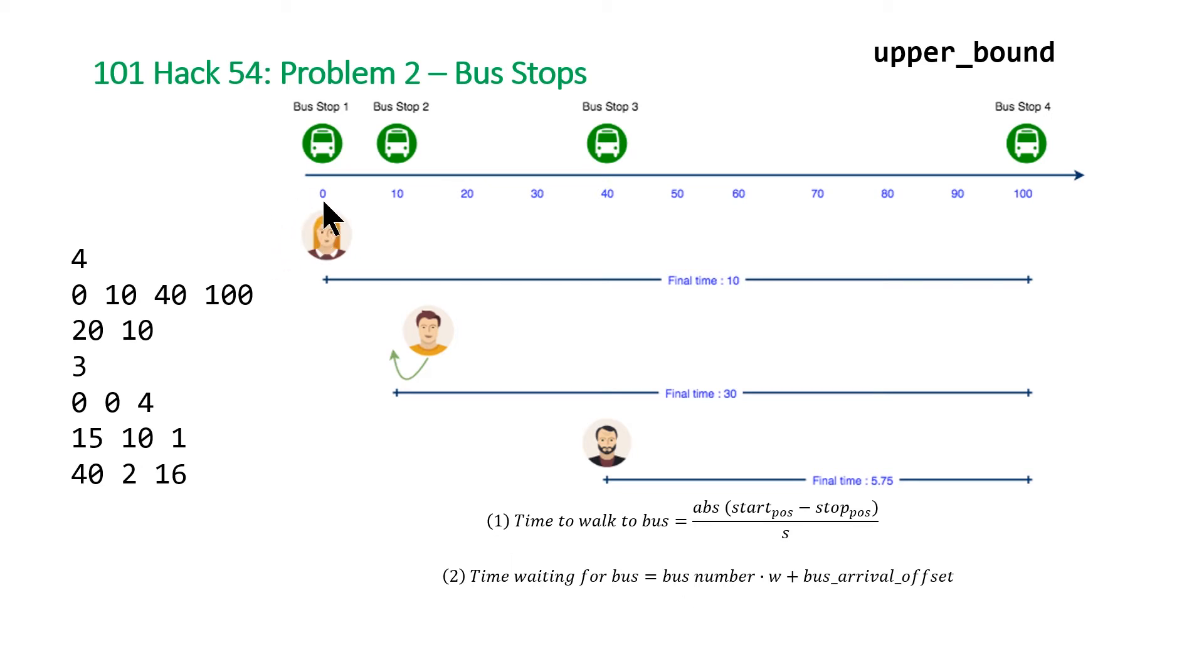Are we going to catch the first bus, the second bus, or the third bus? Then we times that by the waiting time and add to it the bus arrival offset, which means if you're getting to bus stop three, you have to add the time it takes for the third bus that starts at position zero to get to bus stop number three.